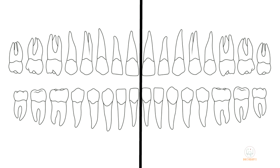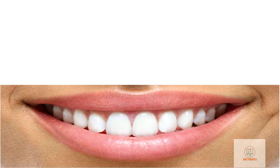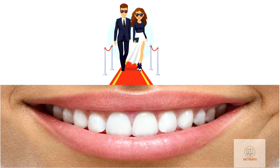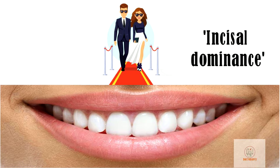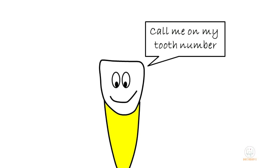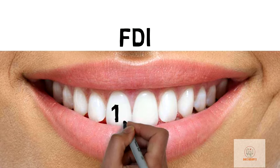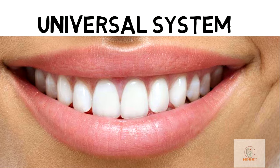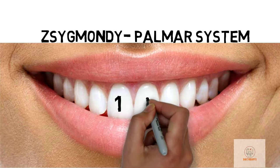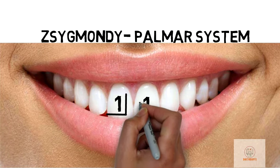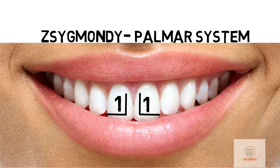The maxillary central incisor is the first tooth from the midline and is the tooth with the most prominent effect on a person's smile — this is called incisal dominance. The tooth number of the permanent maxillary central incisor in the FDI system is 11 and 21, in the Universal system is 8 and 9, and in the Sigmondi Palmer system the tooth number for right and left is one with different brackets according to the quadrant.